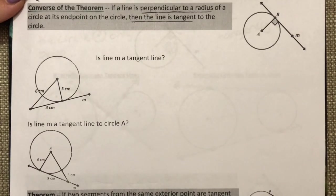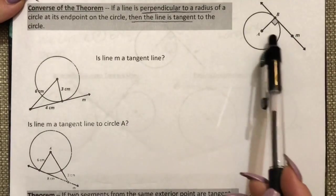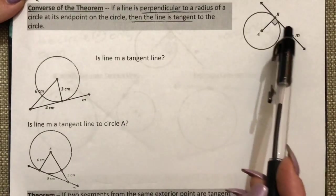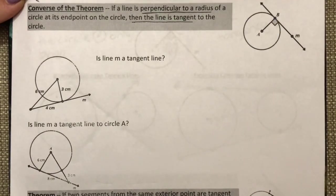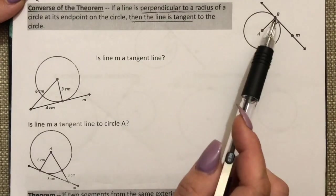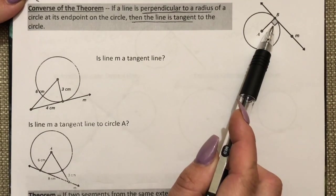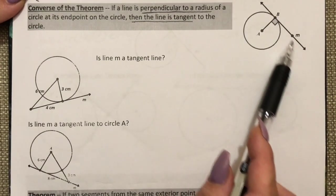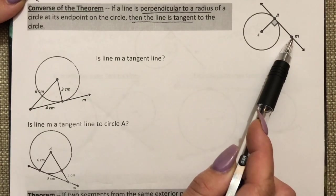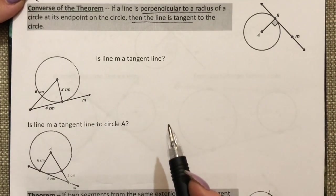Here we're going to talk about the converse of the previous theorem. So previously we said that this radius and this tangent line created a perpendicular intersection. Well now what we're saying is if the intersection is perpendicular then this line which is called M in this case must be tangent.